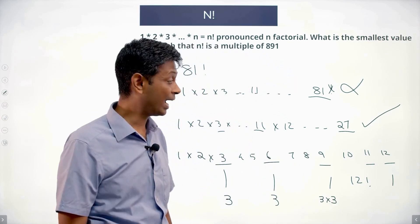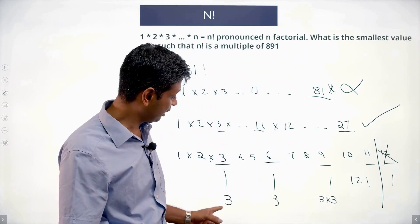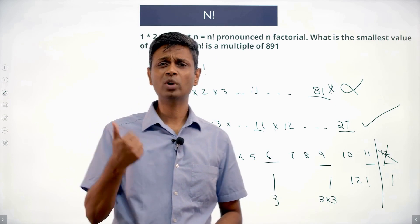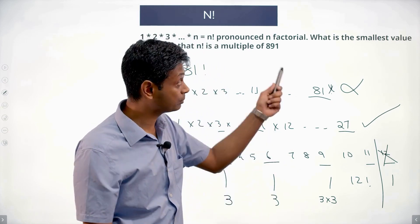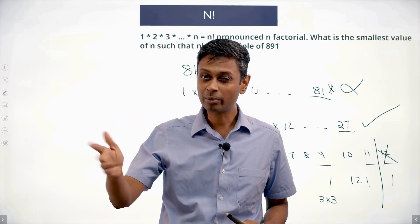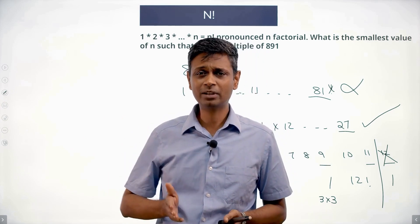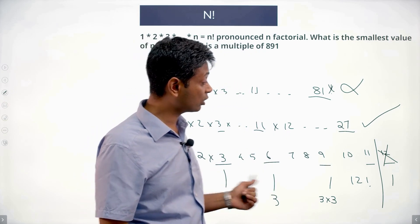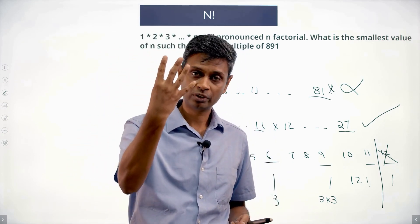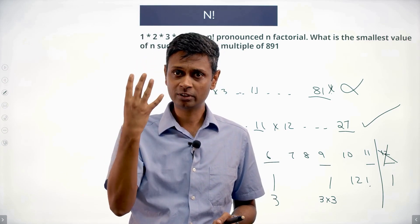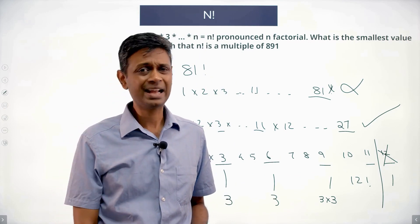But wait — I don't even need 12. I can stop at 11. By the time I do 1 into 2 into 3 into 4 into 5 into 6 into 7 into 8 into 9, there's a 3 from 3, a 3 from 6, and two 3s from 9. So my number is already a multiple of 81. I only need to get the 11. 11 is prime, so 11 can only come from 11 itself. So 11 factorial gives me 3 × 6 × 9 for the four 3s, plus 11 — that's 81 into 11, which is 891.